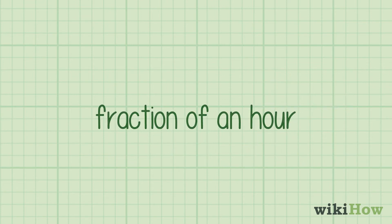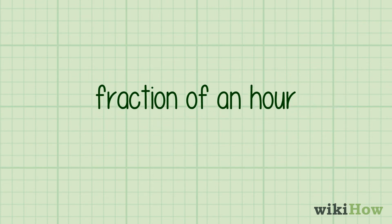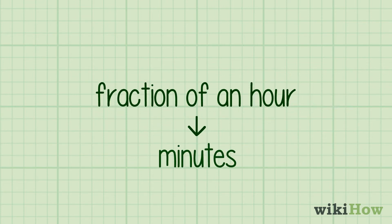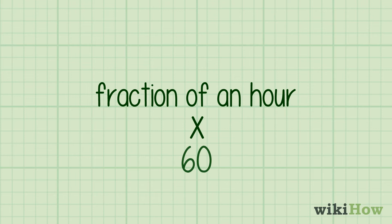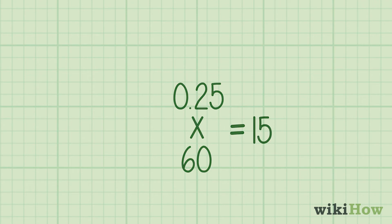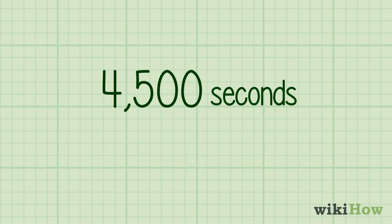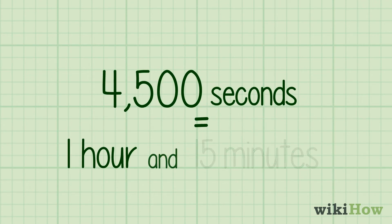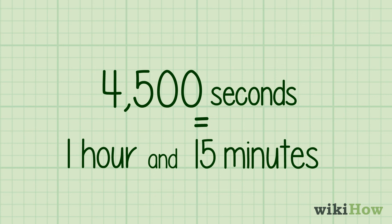If you end up with a fraction of an hour and want to convert it into minutes, multiply the fraction by 60. In the previous example, multiplying 0.25 by 60 gives you 15, which means that 4,500 seconds is equal to 1 hour and 15 minutes.